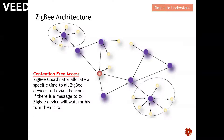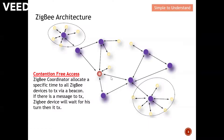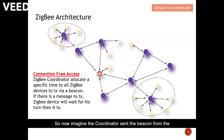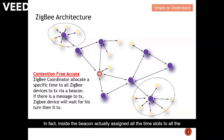For example, this end device wants to send a message to the coordinator. The end device will wake up and wait for the beacon from the coordinator. The coordinator sends the beacon through the router, it reaches the next router, and then it reaches the end device. Upon receiving the beacon, the beacon indicates which time slot is assigned to this end device.